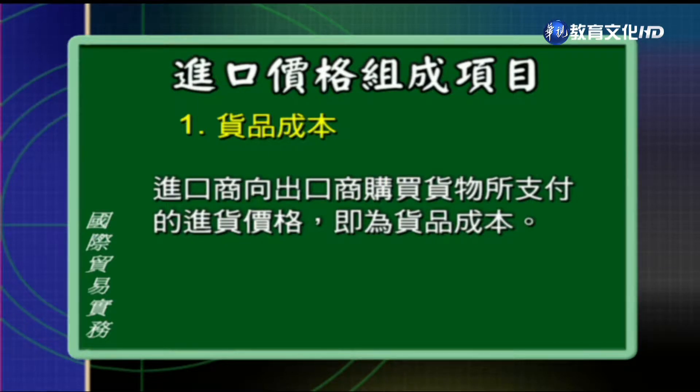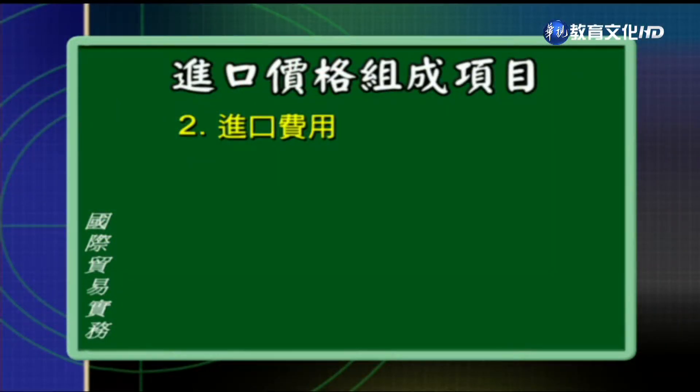进口价格的组成成分同样也分成三个项目。第一个项目就是进口商品的货品成本，进口商向出口商购买货物所支付的进货价格，就是进口商品的货品成本。第二个项目就是进口费用，同样的，进口的费用种类也非常的多，只要是跟进口有关的费用我们都应该考量进去，比如说进口运费，是指从出口地到目的地之间的国际运输费用。这个运费如果是由出口商支付的话，我们进口商在计算进口价格的时候就不用再加进去了，因为这个部分已经被算在货品成本里面。